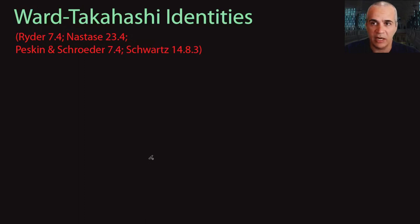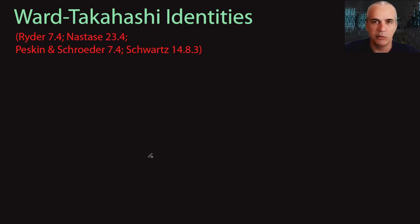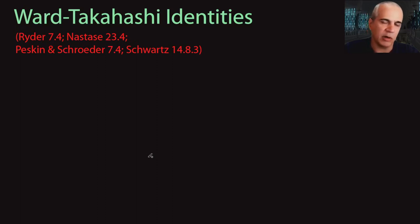Before we move on to the next step — which is doing the power counting in QED to see the structure of divergences, and at the same time looking at what physical quantities we'll be measuring in experiments and doing the field redefinitions which will eliminate those divergences — we want to explore the symmetries a little bit, because that will constrain QED a lot and will also influence the power counting. So we have to do that first.